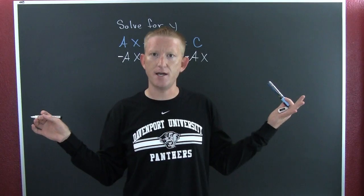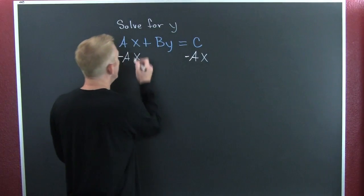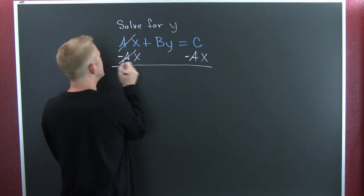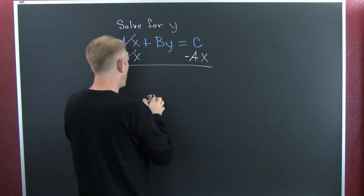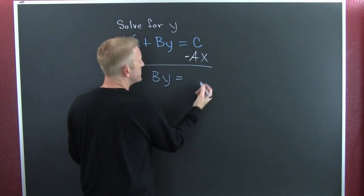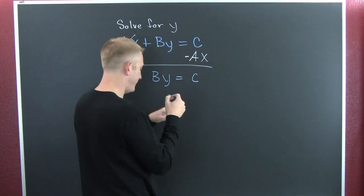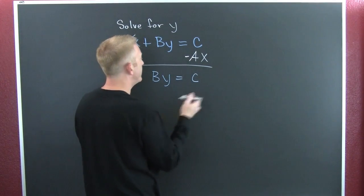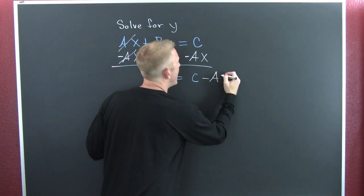We're taking an ax off each side. And oh boy, I'm left with By is equal to C, wait for it, wait for it, minus ax, because we took that off of both sides.